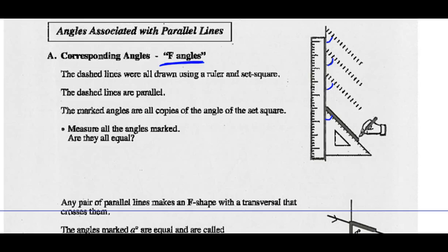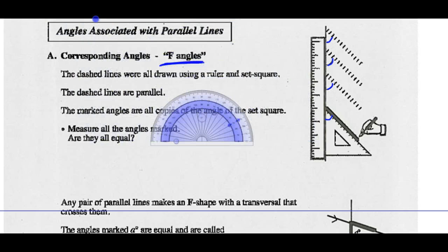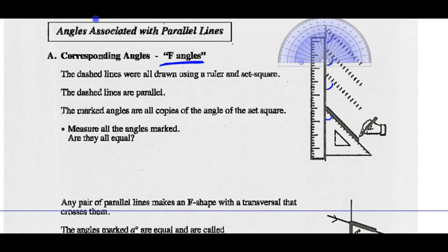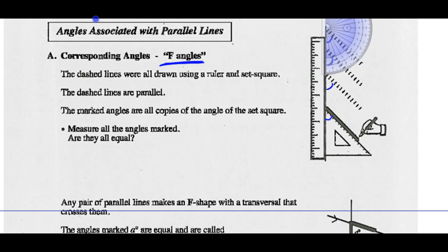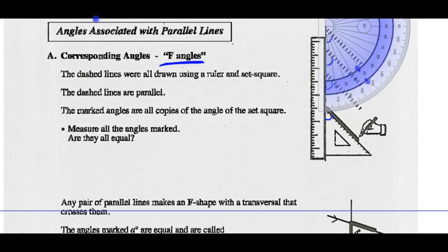Measure all the angles marked — are they all equal? Get out your protractor and let's quickly measure those. We'll take our protractor over here, rotate it in place, and measure this angle up here. That angle looks to be approximately 40 degrees.